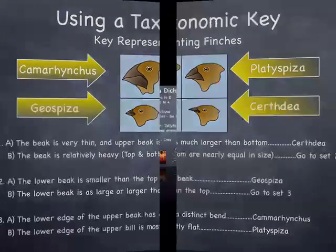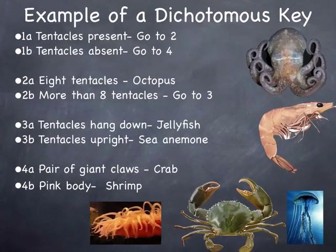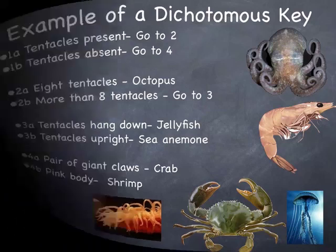And in your notes you have lots of examples. Here's another one. It's pretty simple. But again, if you didn't know what these sea creatures were, you can use this key to figure it out. For example, let's take this one. Alright, are the tentacles present or absent? Present. I go to two. Is it eight tentacles or more than eight? More than eight. I go to three. Do the tentacles hang down or are they upright? Upright. This is hanging down. Upright, it's a sea anemone. So again, you follow statement by statement until you've identified your unknown species. There's another example.